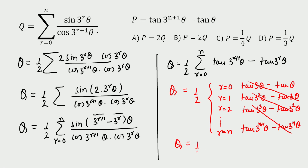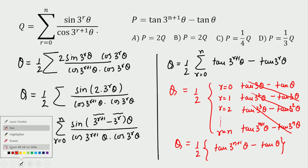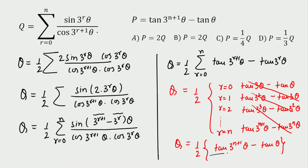So q = ½ · [tan(3^(n+1)·θ) − tan(θ)]. This expression is exactly equal to p, which is given as tan(3^(n+1)·θ) − tan(θ). Therefore p = 2q, meaning λ = 2. That is our final answer.